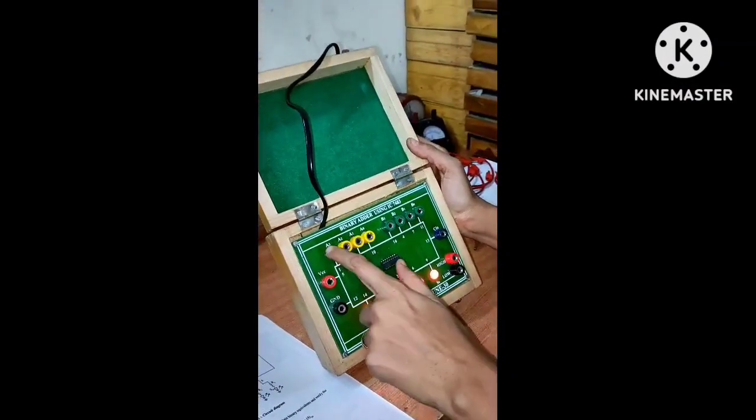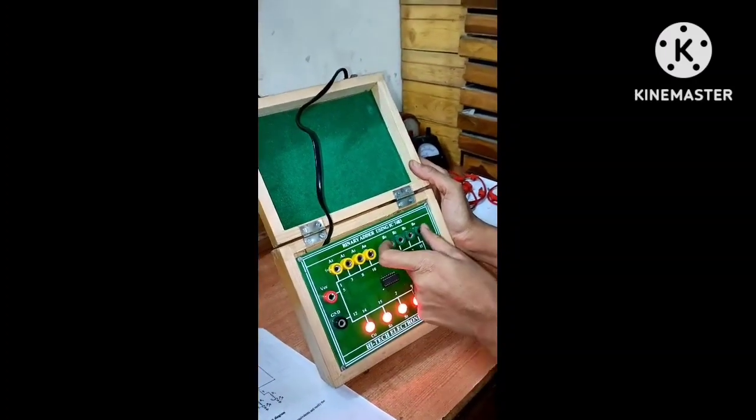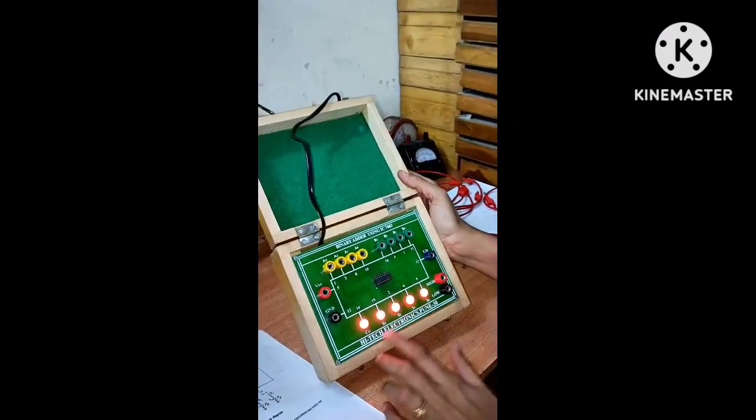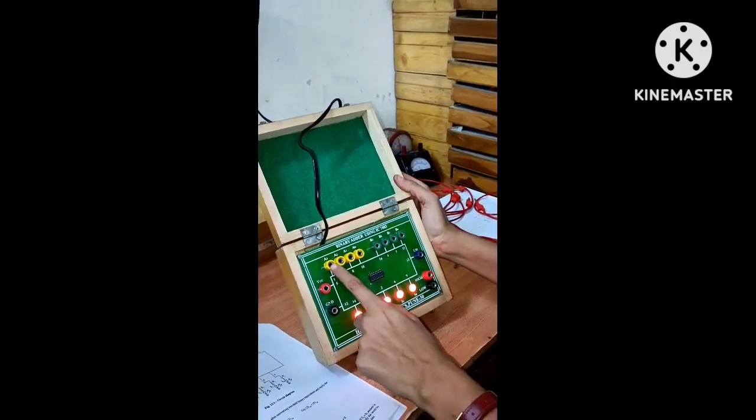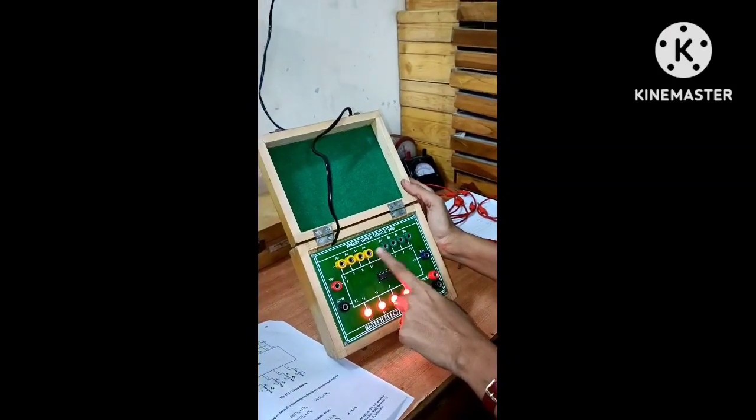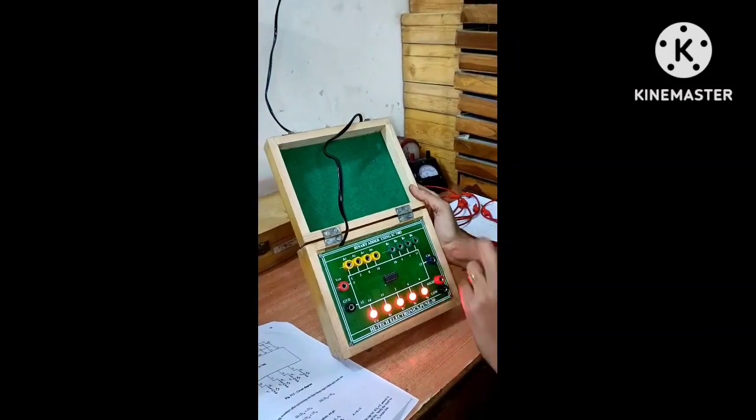Here you see the data inputs for A and B. We will get the sum outputs S3, S2, S1, S0 from the addition of inputs A3, A2, A1, A0 and B3, B2, B1, B0.